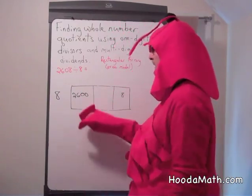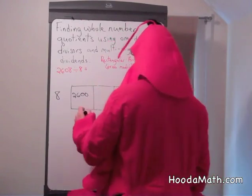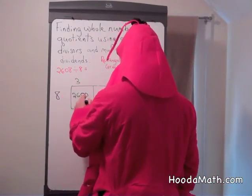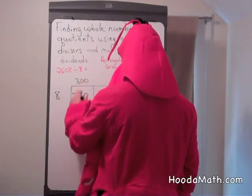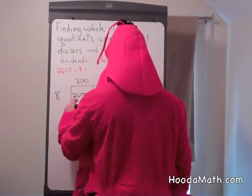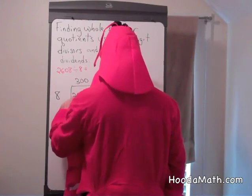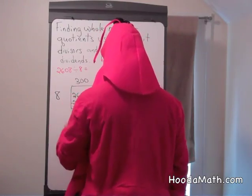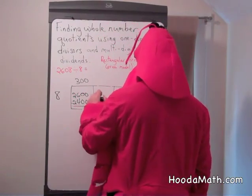How many times does 8 go into 26? Well, about 3 with two zeros — 300. 8 times 0 is 0, 8 times 0 is 0, and 8 times 3 is 24. We subtract and we have 200 left. We bring the 200 right here.